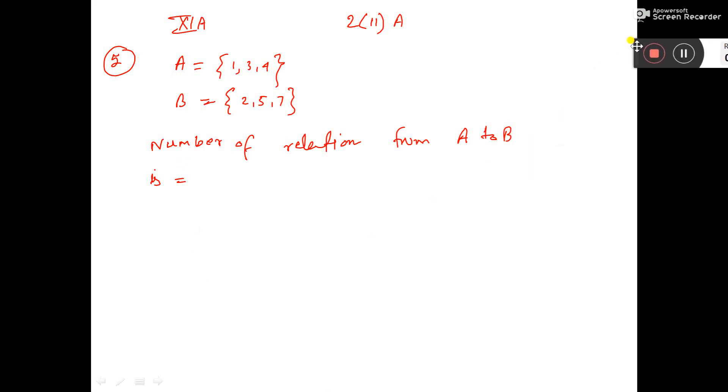This is question number 5. Two sets A and B are given. Find the number of relations from A to B.